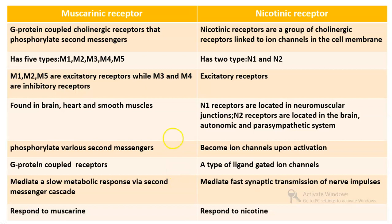Now let us see the difference between muscarinic receptors and nicotinic receptors. Muscarinic receptors are G-protein coupled cholinergic receptors that phosphorylate second messengers like inositol triphosphate and diacylglycerol, while nicotinic receptors are a group of cholinergic receptors linked to ion channels in the cell membrane.